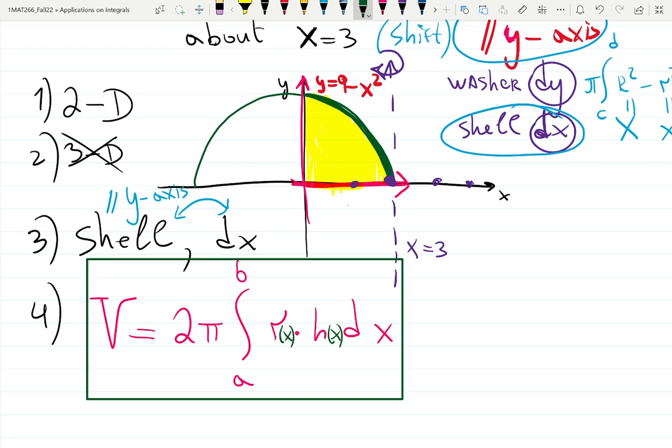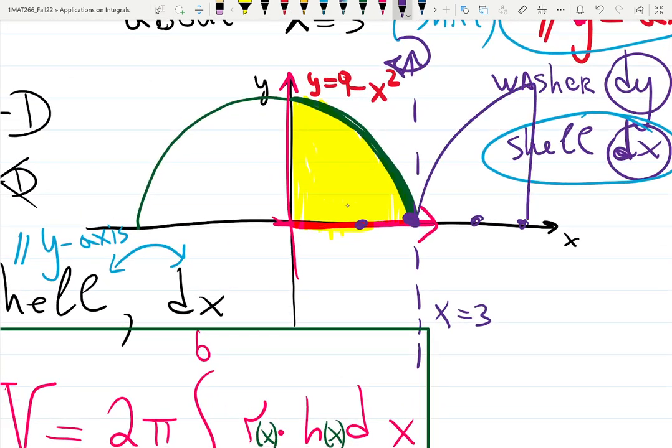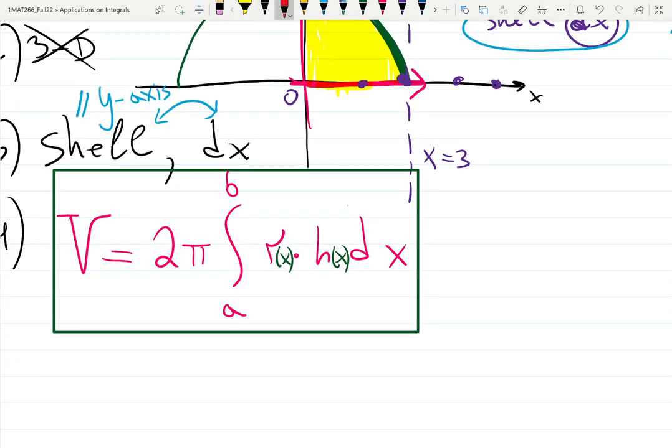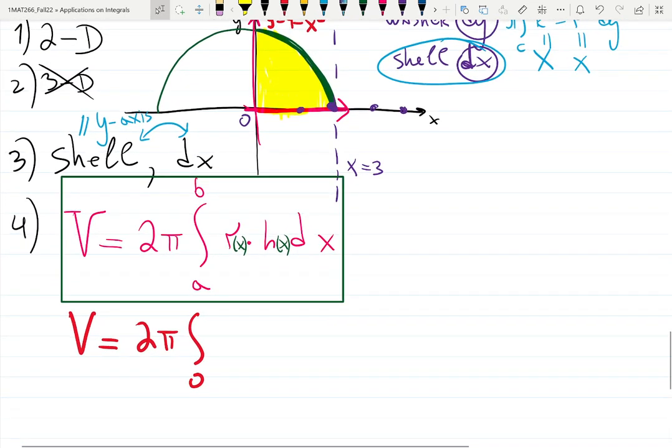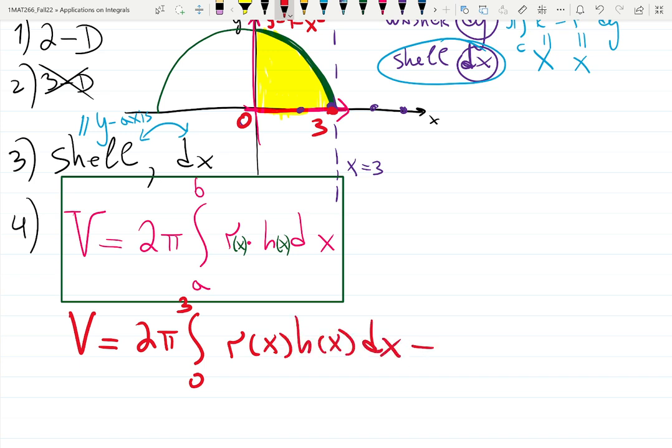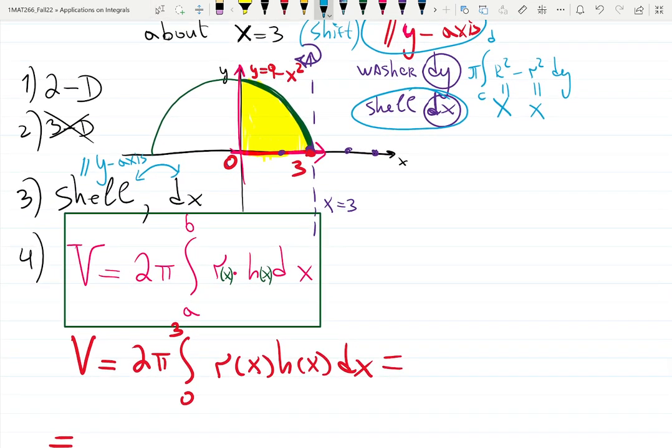Now we can start building them. Why I did not recommend to build a 3D picture for a and b. When you build a 3D picture, which will look like so, many students say that from a to b will be from 0 to this point, which is not true. For shell method, we're using 2D picture for a and b. So I would first create the integral and then fine, you can draw the 3D picture if you want. 2 pi, a is 0, b is 3, 0, 3. And now you have r of x, h of x, dx. Now you can proceed.